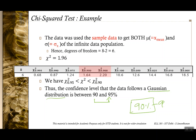Between 90 to 95 percent chance that this data set is a Gaussian distribution. If we had more entries in the chi-square table, we could have a finer range for our confidence interval.